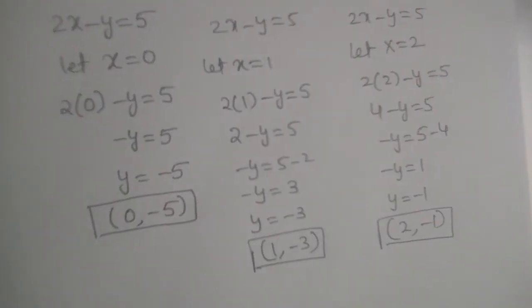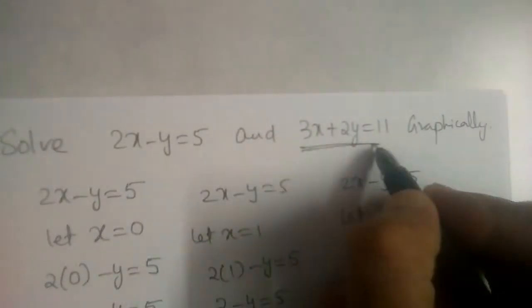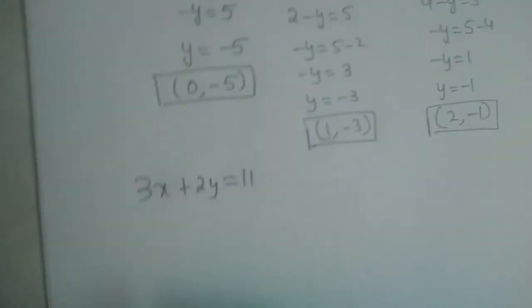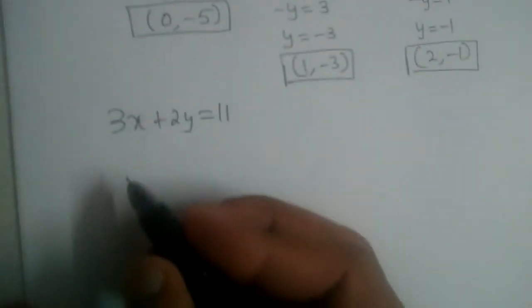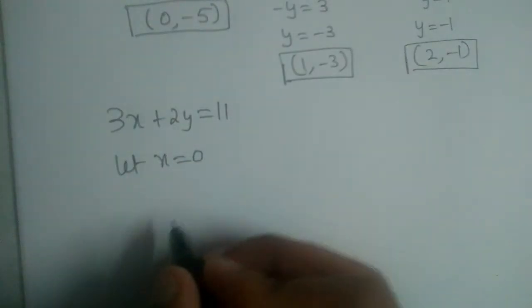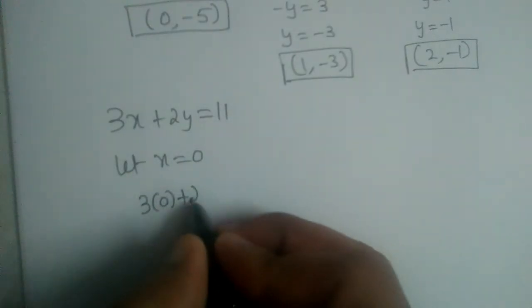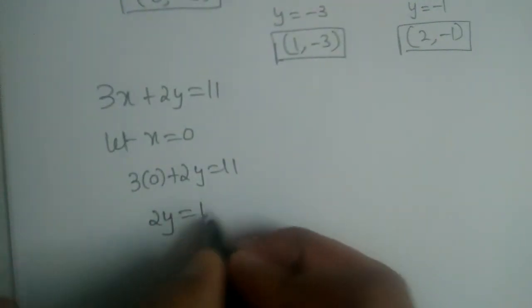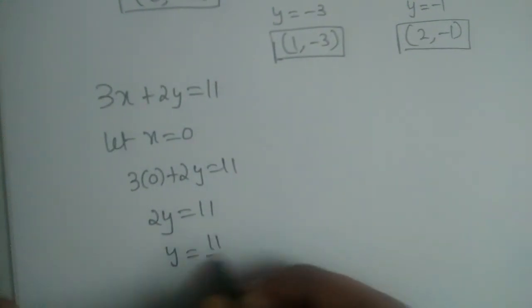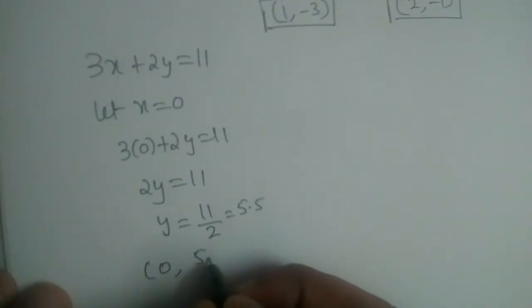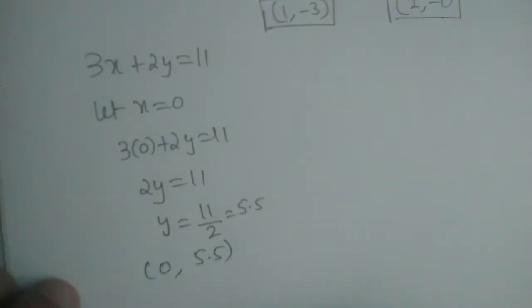Now let us go back to the second equation: 3x plus 2y is equal to 11. We solve it graphically using the same procedure, substituting different values of x. Let x equal 0: 3 into 0 plus 2y is equal to 11, so 2y is equal to 11 and y is equal to 11 by 2, which is 5.5. So the first point is 0 comma 5.5.